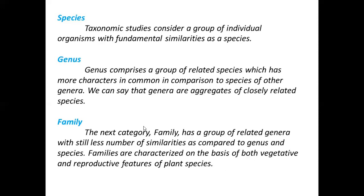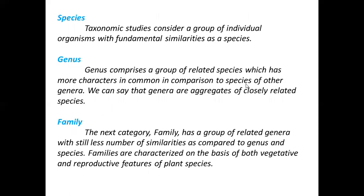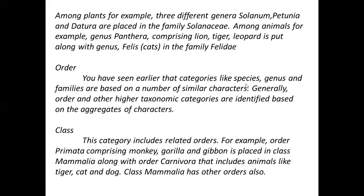After genus, the next category is family. Family is made up of related genera where there are fewer similarities than within species or genus. As we go from species to genus to family, the common features become more general. Then we have order — exactly the same way. Family is grouped to form order, and there are some similarities which we group together. After order, there is class.